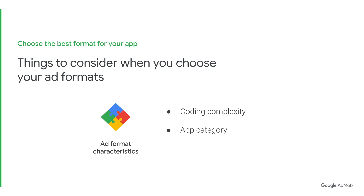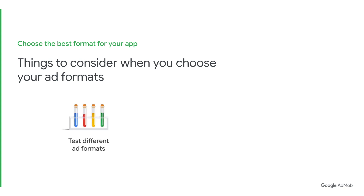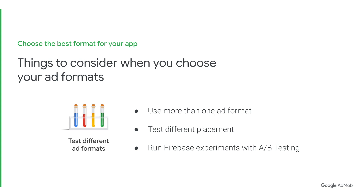You should also consider the category of your app when choosing an ad format. For example, rewarded ads work great in games or other apps where you can offer users a prize, such as coins or extra lives, for engaging with an ad. You should consider native ads if you're looking for a better user experience, more long-term revenue, or both, and you're willing to design your own ads to achieve these goals. After you've implemented an ad format, it's always a good idea to test things out. By testing different ad formats and placements, you'll understand what works best for your app.